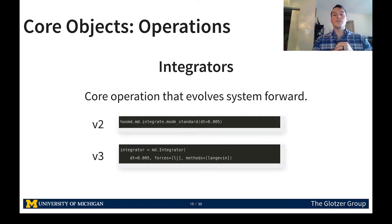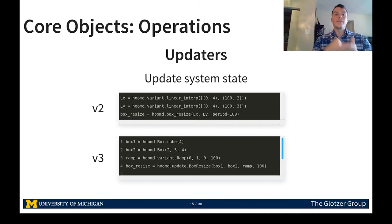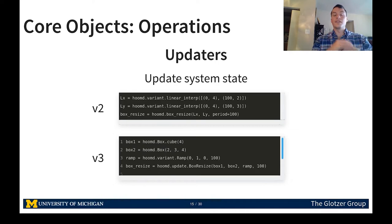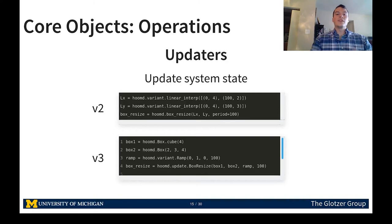Integrators are the core operation that evolves the system forward and are required for all HOOMD-Blue simulations. Updaters update or modify system state. For example, a box resize updater allows the simulation box to change shape according to given values. In version 2, you must explicitly set each degree of freedom; in version 3, you interpolate between two boxes the user provides. Version 3 also introduces variant subclasses allowing different interpolation behaviors, such as cycling between two boxes every 200 time steps, whereas version 2 only supports linear interpolation.